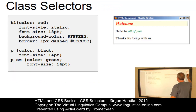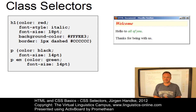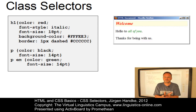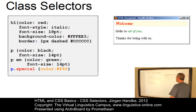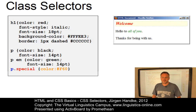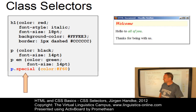Class selectors are used to apply a style to a special kind of one or more HTML elements. They can be used to mark elements which belong to a conceptual group. This means that not all paragraph tags are changed, but only those which have been given a special attribute. The selector 'P dot special' is written in the dot syntax: type selector, dot, class selector, then the property value declarations.